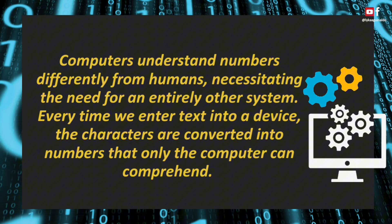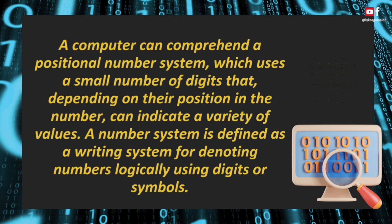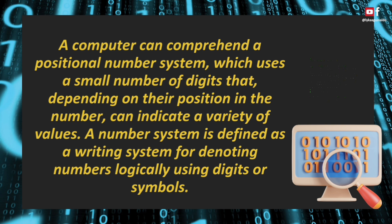Computers understand numbers differently from humans, necessitating the need for an entirely different system. Every time we enter text into a device, the characters are converted into numbers that only the computer can comprehend. A computer can comprehend a positional number system, which uses a small number of digits that, depending on their position in the number, can indicate a variety of values. A number system is defined as a writing system for denoting numbers logically using digits or symbols.